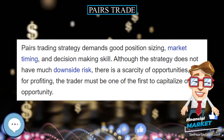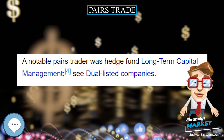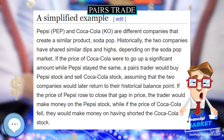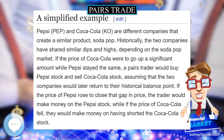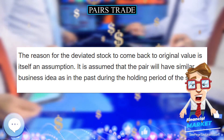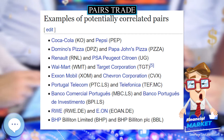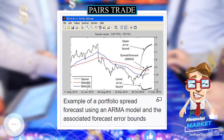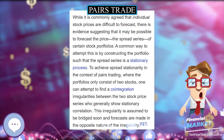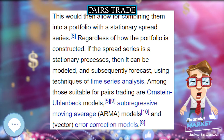Overview. The strategy monitors performance of two historically correlated securities. When the correlation between the two securities temporarily weakens — i.e. one stock moves up while the other moves down — the pairs trade would be to short the outperforming stock and to long the underperforming one, betting that the spread between the two would eventually converge. The divergence within a pair can be caused by temporary supply/demand changes, large buy/sell orders for one security, or reaction to important news about one of the companies.